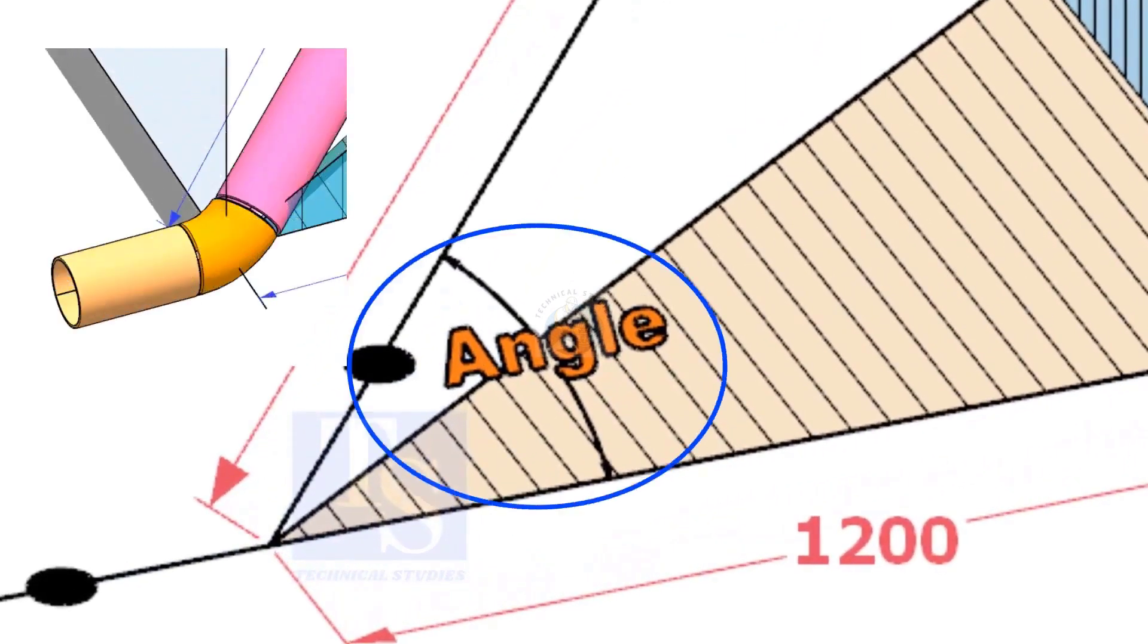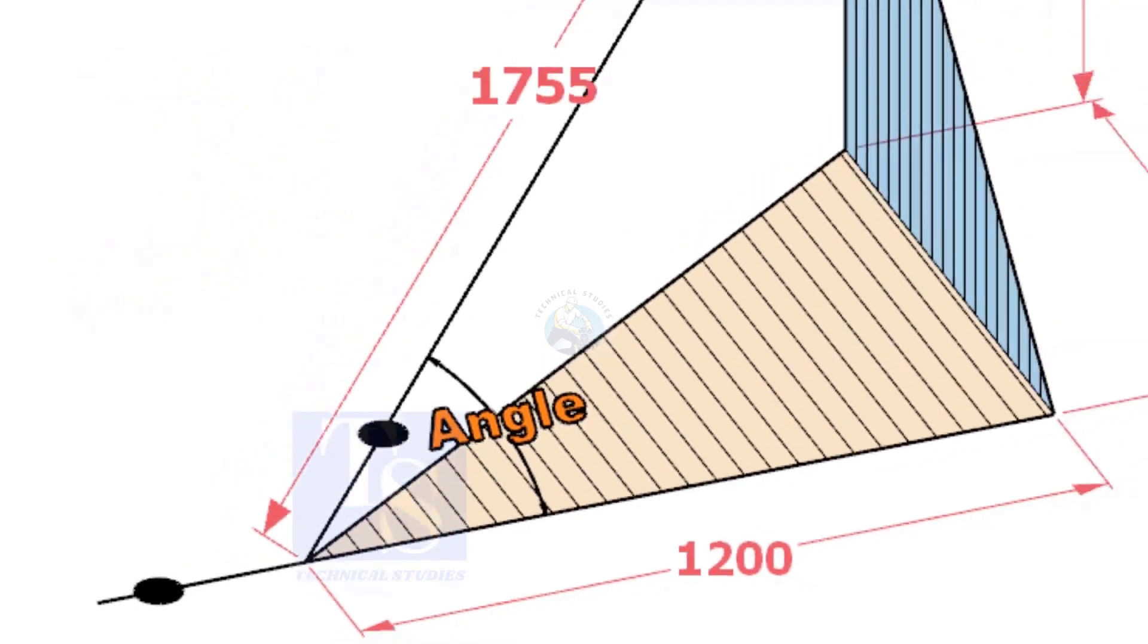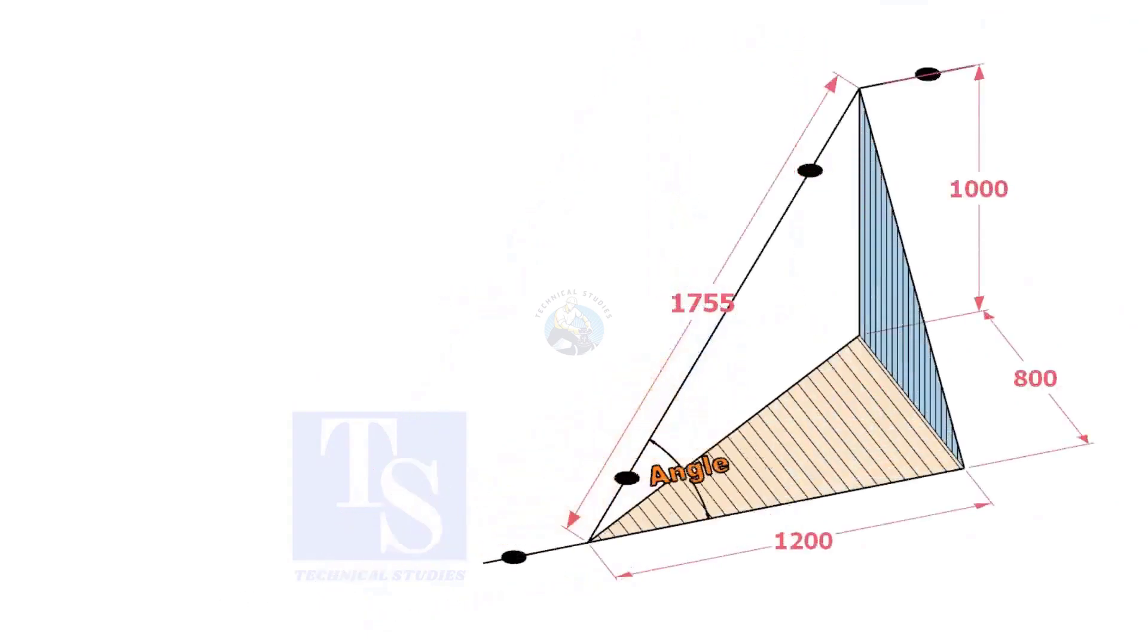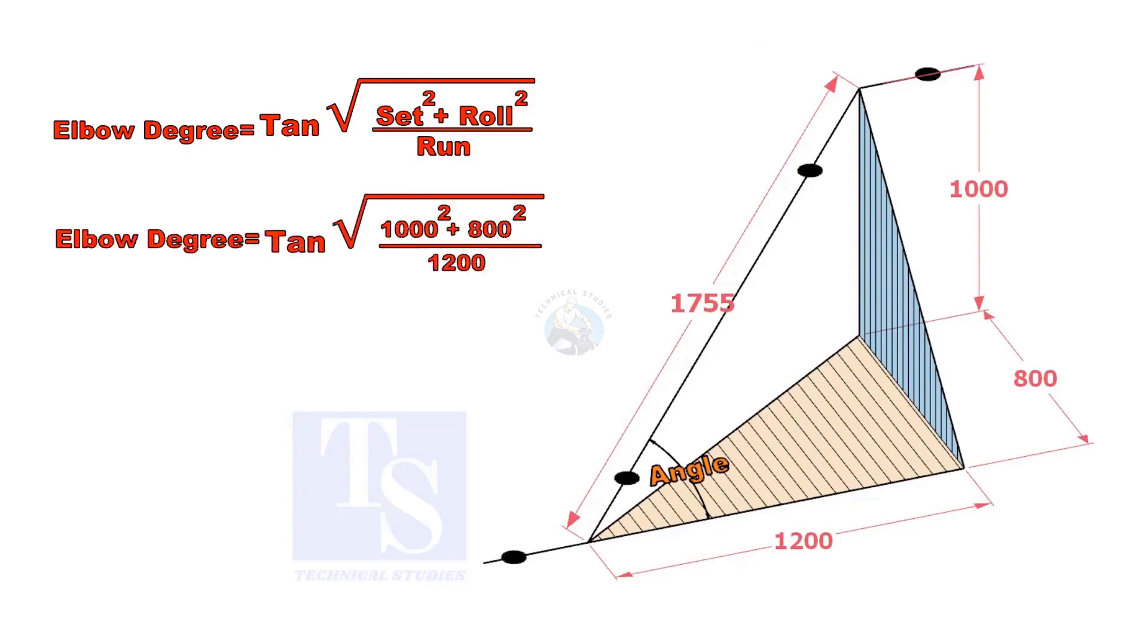Let us calculate the degree of the elbow or the including angle. The formula is the root of the set and the roll divided by run into tan.